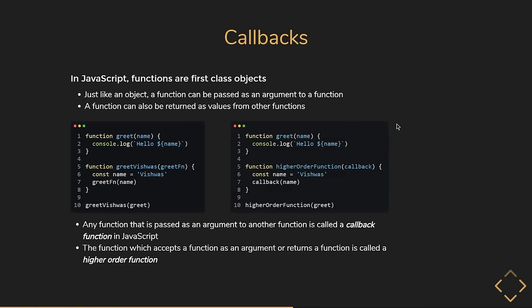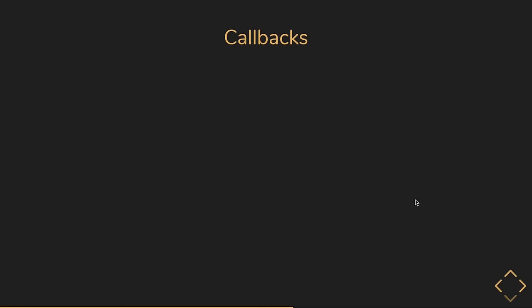Any function that is passed as an argument to another function is called a callback function in JavaScript. The function which accepts a function as an argument or returns a function is called a higher-order function. On line 5 we have a higher-order function which accepts a callback function, and on line 7 calls that callback function passing in the name constant. A function passed as an argument to another function is called a callback function — but why do we need callback functions?